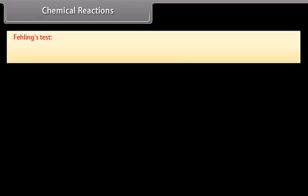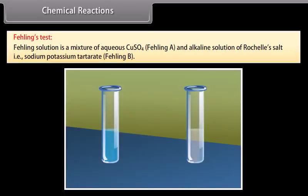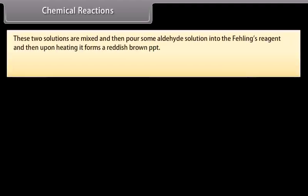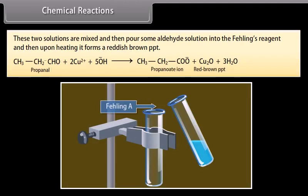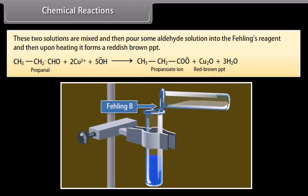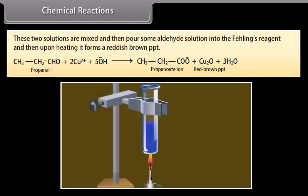Fehling's test: Fehling's solution is a mixture of aqueous copper sulfate (Fehling A) and alkaline solution of Rochelle's salt, i.e., sodium potassium tartrate (Fehling B). These two solutions are mixed, then some aldehyde solution is poured into the Fehling's reagent, and upon heating it forms a reddish brown precipitate.